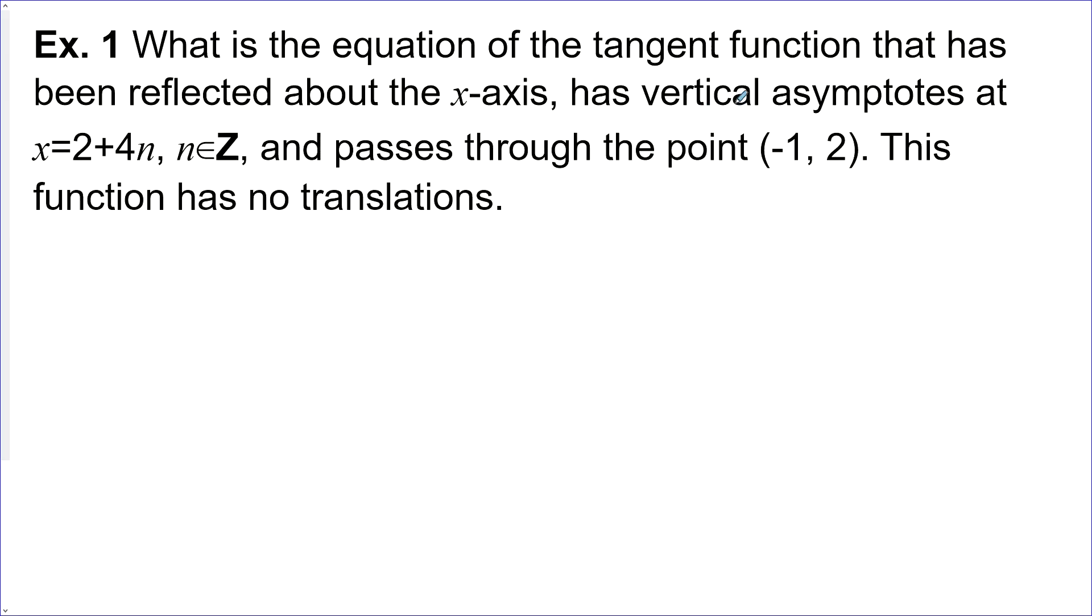What is the equation of the tangent function that has been reflected about the x-axis, has vertical asymptotes at x equals 2 plus 4n, and passes through the point (-1, 2)? This function has no translations. If it has no translations, then let's set up what our function might look like. We'll have an a value and we'll probably have a b value and no c or d values. So no translations, vertical or horizontal.